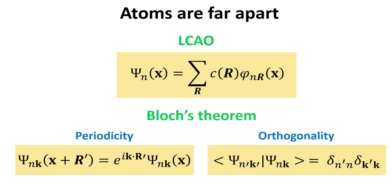Although the atoms are assumed far from each other initially, they are still arranged periodically through space. Therefore, Bloch's theorem must still apply for this system. Because of this, it is necessary to make our linear combinations of atomic orbitals consistent with Bloch's theorem. That is, we need to find a set of coefficients C of R, such that our linear combination of atomic orbitals obeys the periodicity and orthogonality conditions of Bloch states.